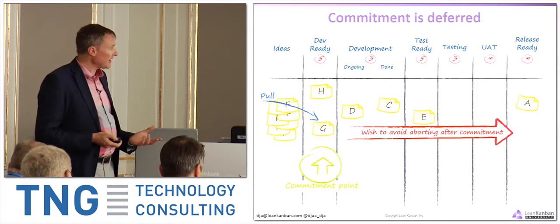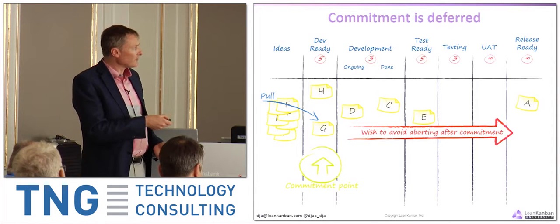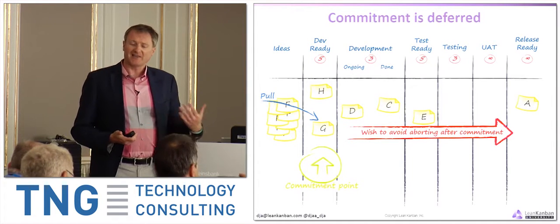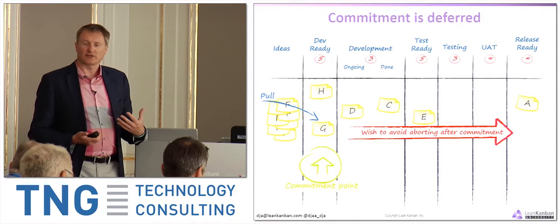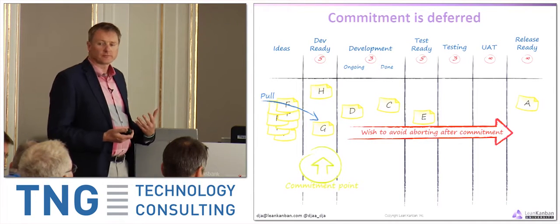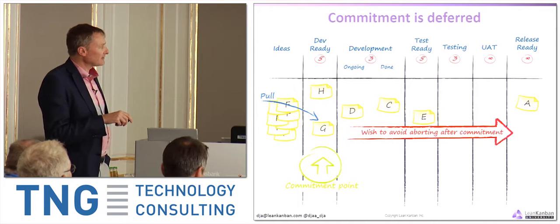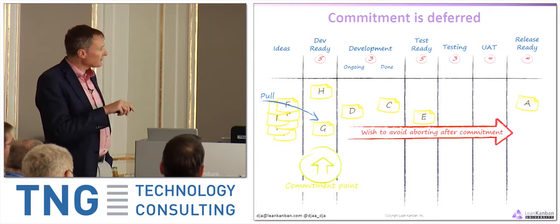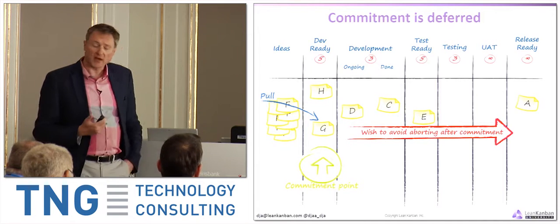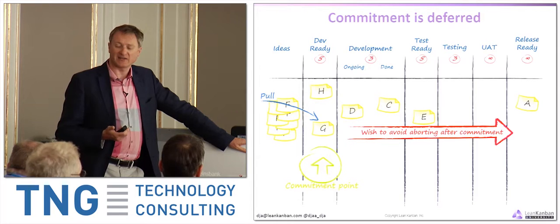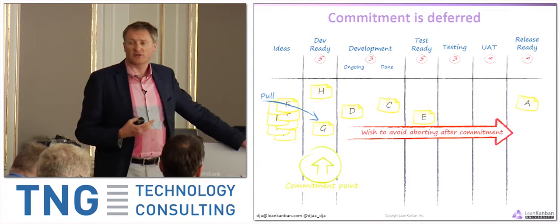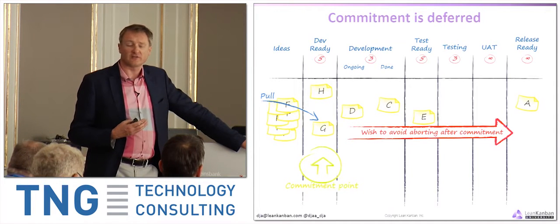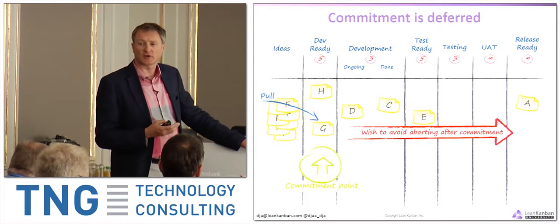The implication of that commitment decision is that we would wish to avoid aborting it after commitment. If it had to be aborted, the implication is you weren't absolutely sure you wanted it — so why did you ask for it? We really want close to zero abort rate after commitment. Upstream, discard rates can be as high as 90%. At a recent conference in New York, the Google search engine team talked about this — 75% of the ideas they develop are not developed into production code.